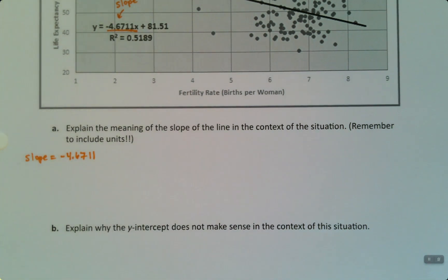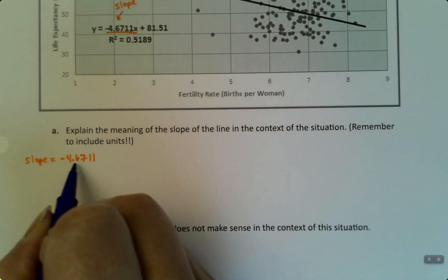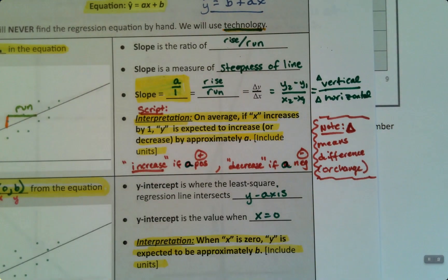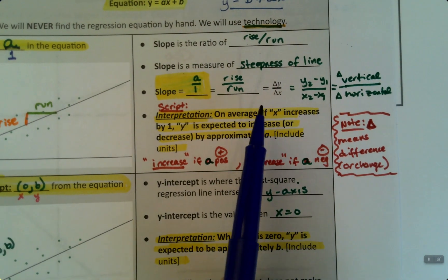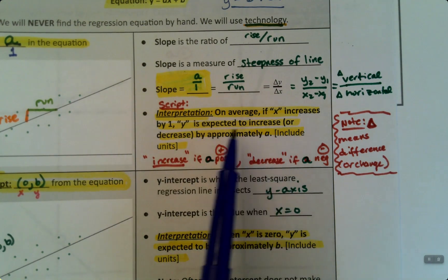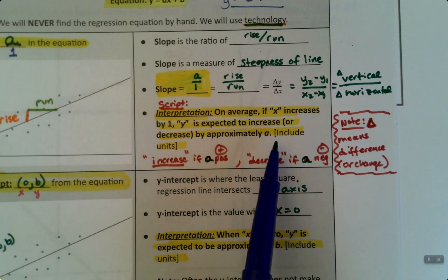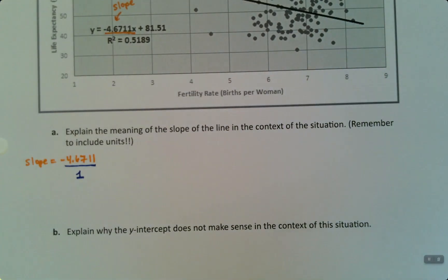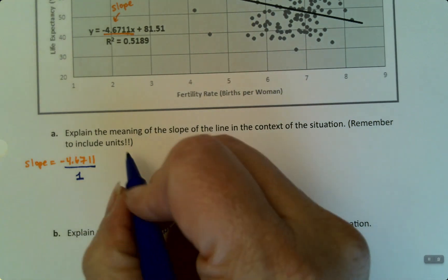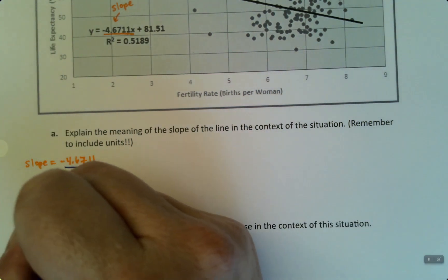Now, what we could think about this is that this is really negative 4.6711 over 1, because any number is over 1 if you want it to be. And that helps us think about the relationship that we want to see when we think about the rise and the run. So, and the script. So on average, if x increases by 1, the y is expected to increase or decrease by approximately A and include units. So let's think about this. And I should say, I'm going to put it right over here. Use the script.